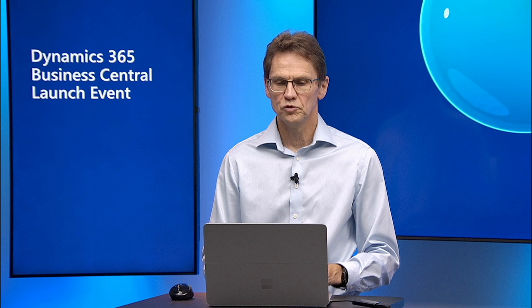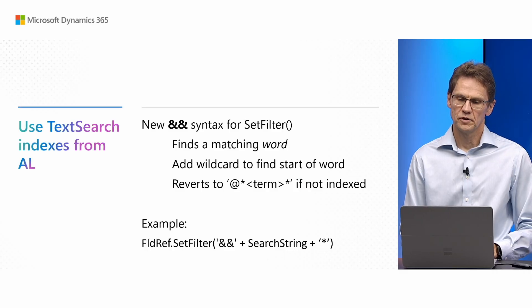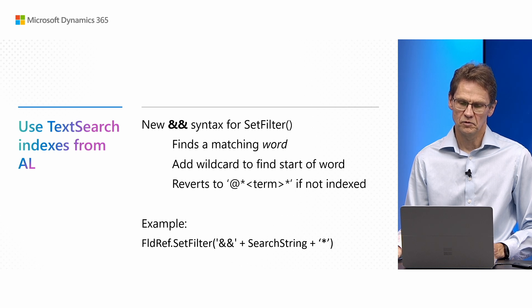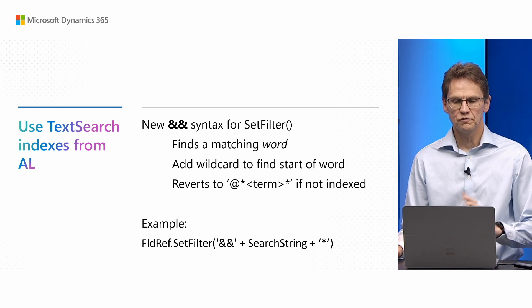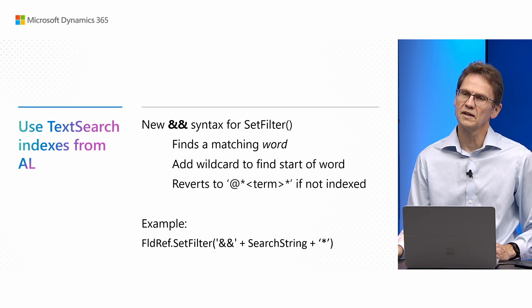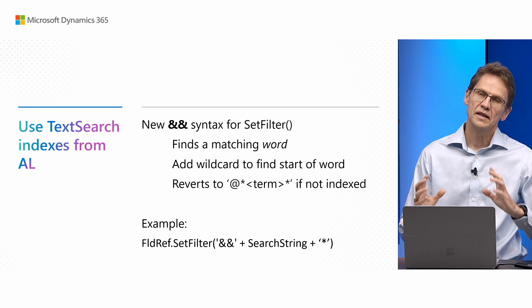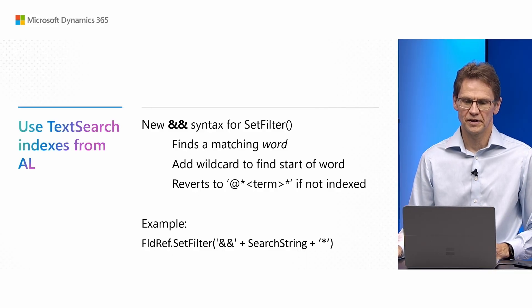It's not only in the UI that you can make use of modern search — you can also use it on the Record API. It is built into the setFilter method, so you can now use the new operator && for calling setFilter. For example: FieldRef.setFilter('&&', searchString + '*') will find a matching word. If you want to find the beginning of a word, you add a wildcard star at the end. If the field you're searching does not have OptimizedForTextSearch equals true, then it will revert back to existing behavior using case-insensitive contained search.